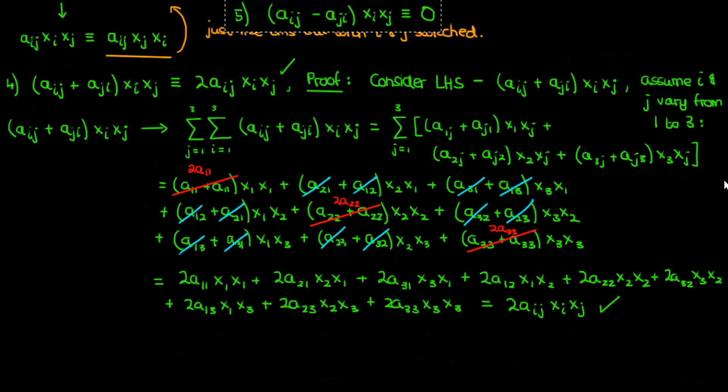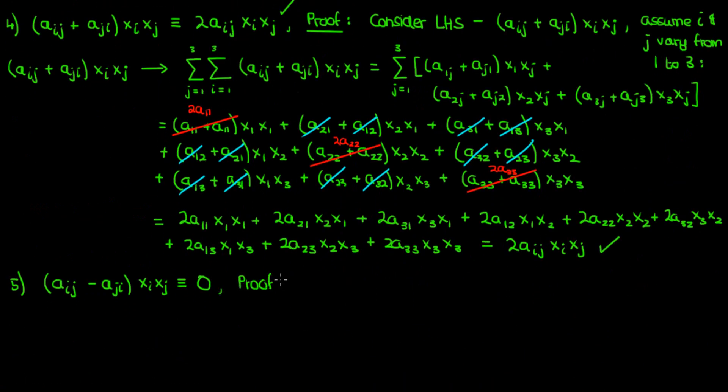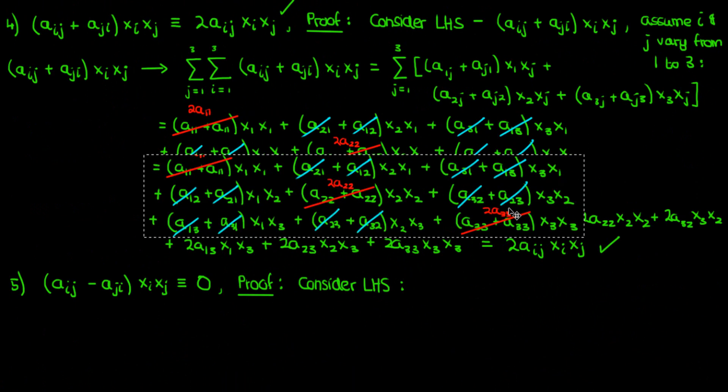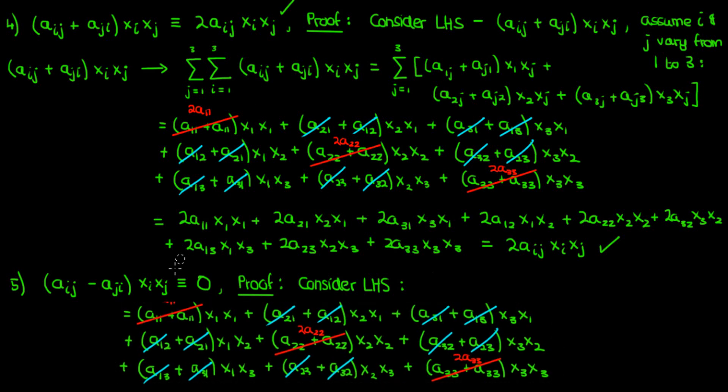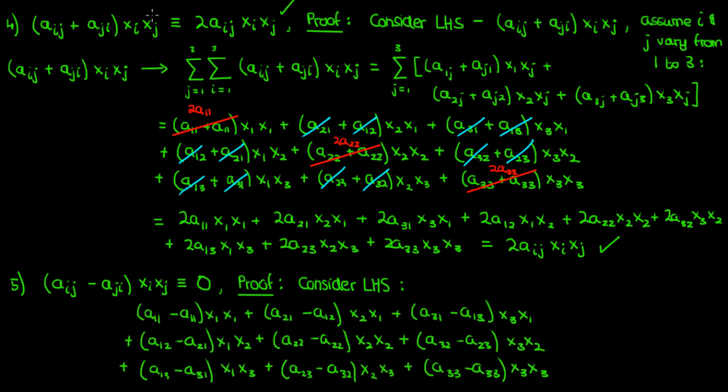Finally, let's look at the fifth identity. For the proof, what we can do is exactly what we did for the fourth identity and expand out the summation that the left-hand side represents. The expanded term will be exactly the same as what we got for the fourth identity, except now the pluses between the a's will get replaced by minuses, and after a whole bunch of simplifying and cancelling common terms, we'll end up with 0, and so we've proven the fifth identity.